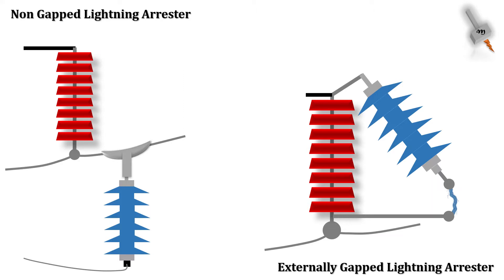Both designs are different versions of Line Surge Arrester which are used for transmission line protection. In NGLA, the arrester unit is connected electrically in parallel to a string insulator or composite insulator in a transmission line. In an EGLA, the arrester unit is placed in parallel to the insulator but they are not electrically connected from phase to earth. Rather, there is a spark gap in series with the Lightning Arrester.